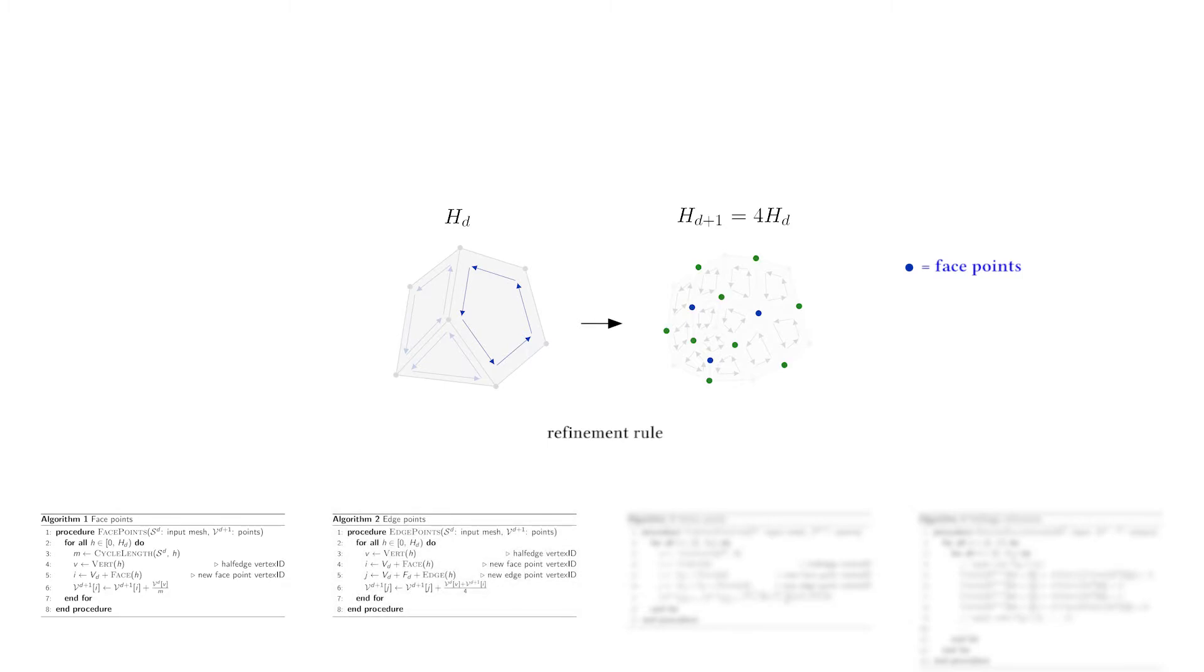Second, we compute each new edge point using the half edges that span its original edge. For instance, this green edge point originates from these green half edges.